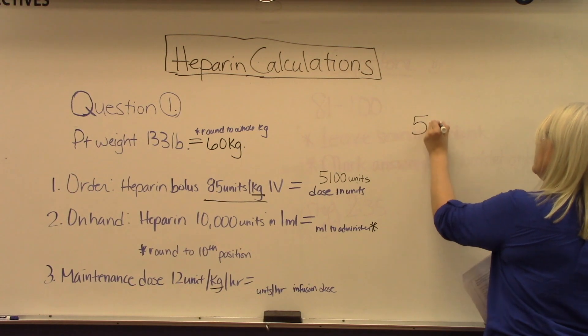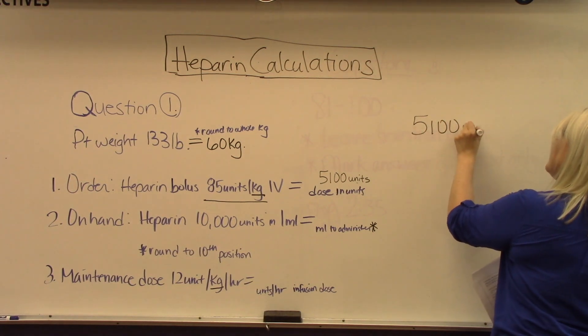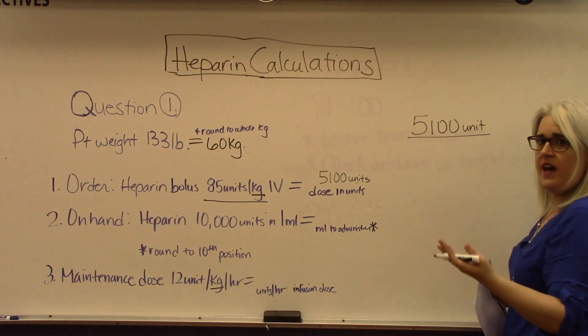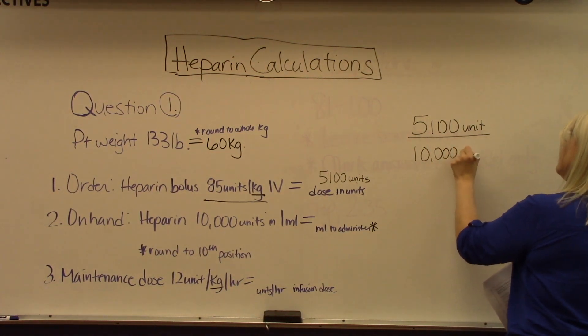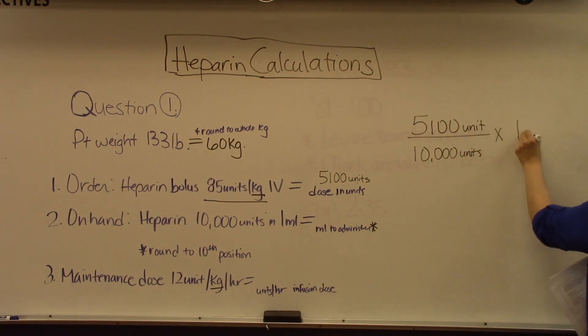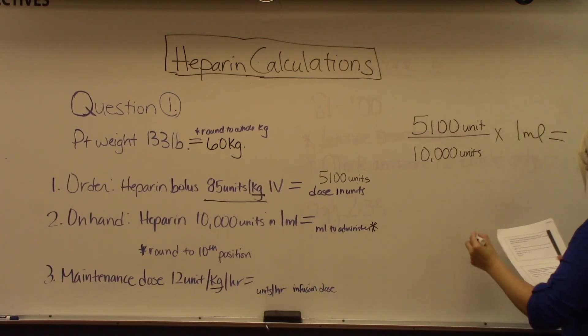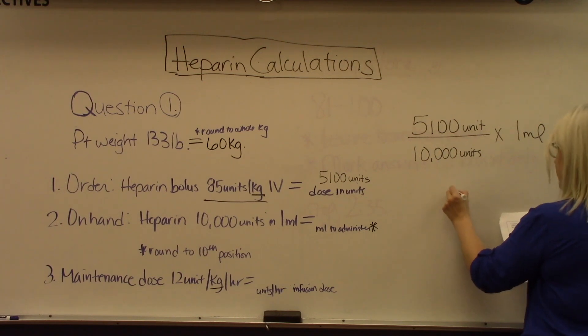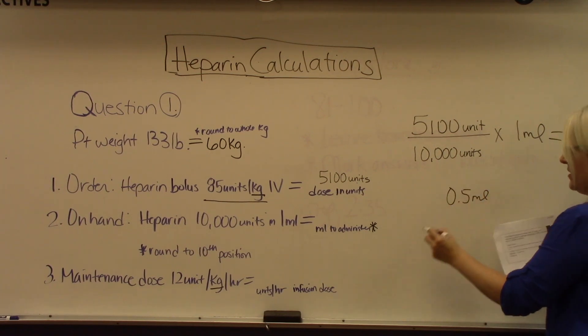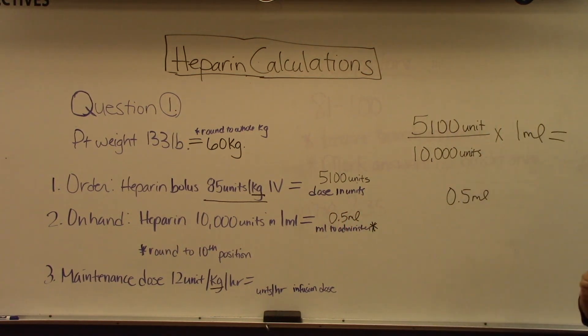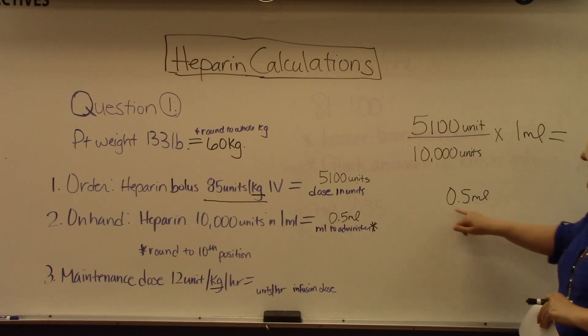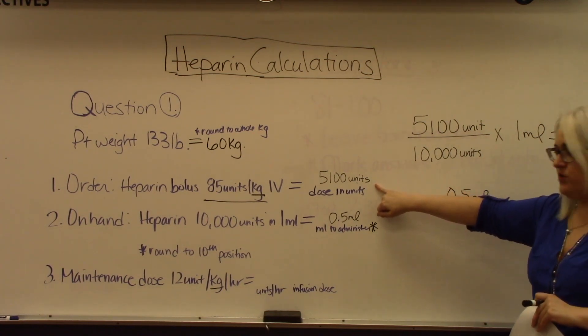This is your standard formula for calculating how much medication to give. We put our desired dose, 5,100 units, over what we have available, 10,000 units, times our volume of one milliliter. After you do this, you should come up with 0.5 milliliters, which is what we're going to administer to the patient, equal to 5,100 units.